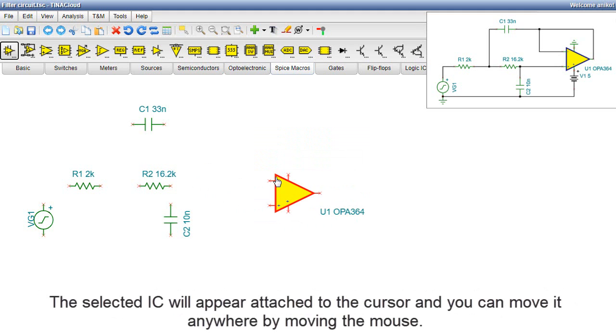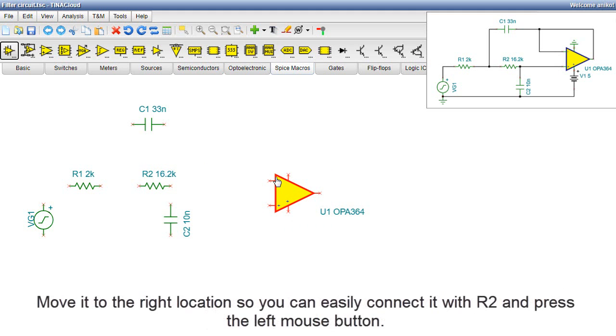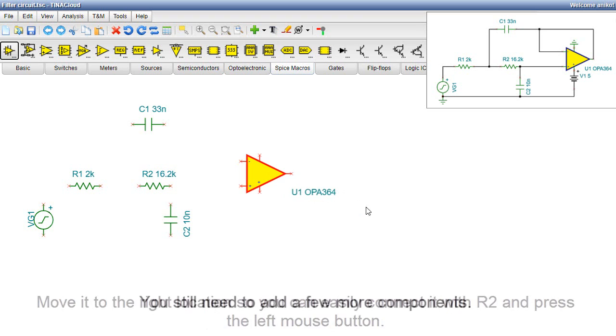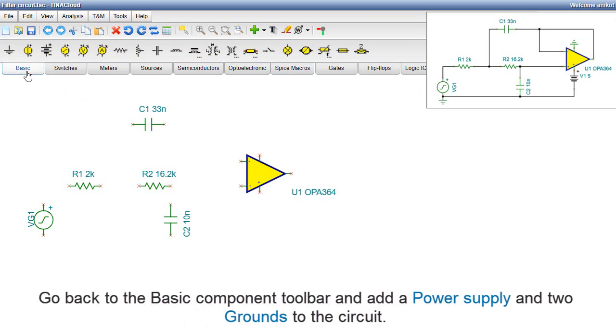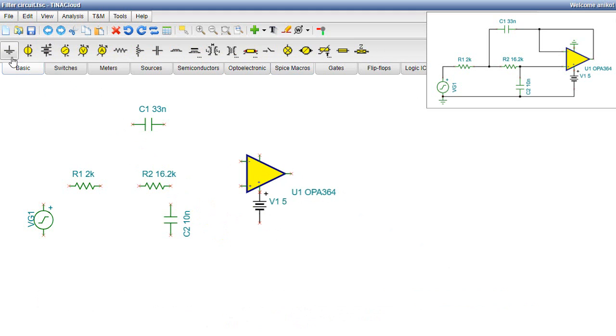The selected IC will appear attached to the cursor, and you can move it anywhere by moving the mouse. Move it to the right location so you can easily connect it with R2, and press the left mouse button. You still need to add a few more components. Go back to the Basic Component Toolbar and add a power supply and two grounds to the circuit.